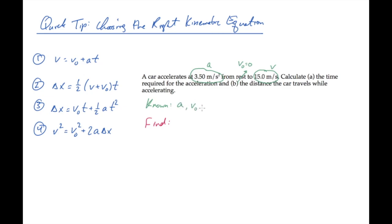So we know the acceleration, the initial velocity, and the final velocity. The quantities we're trying to find are the time, that's t, and the distance, in this case that's delta x, the same as the displacement. So we know the quantities in green and we're trying to find those in red.